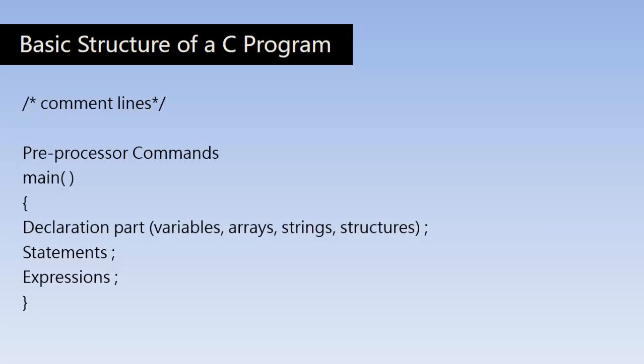Inside the main function our actual code resides. In the declaration part we declare the variables, arrays, strings, and structures that we are going to use in the program. Other executable statements include input and output statements, and expressions for special operations — expressions may be mathematical, logical, or any other kind. Don't worry, we will learn all these in later classes. You can also have user-defined functions after the main function, normally for other individual operations.